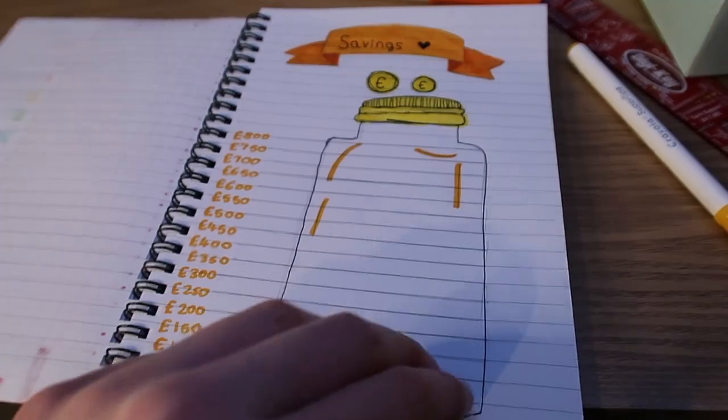Okay, the next page is going to be the books read page. I'm just going to put a simple title at the top and then fill the page with a pile of books. And then inside those books I'm going to write which books I've read.